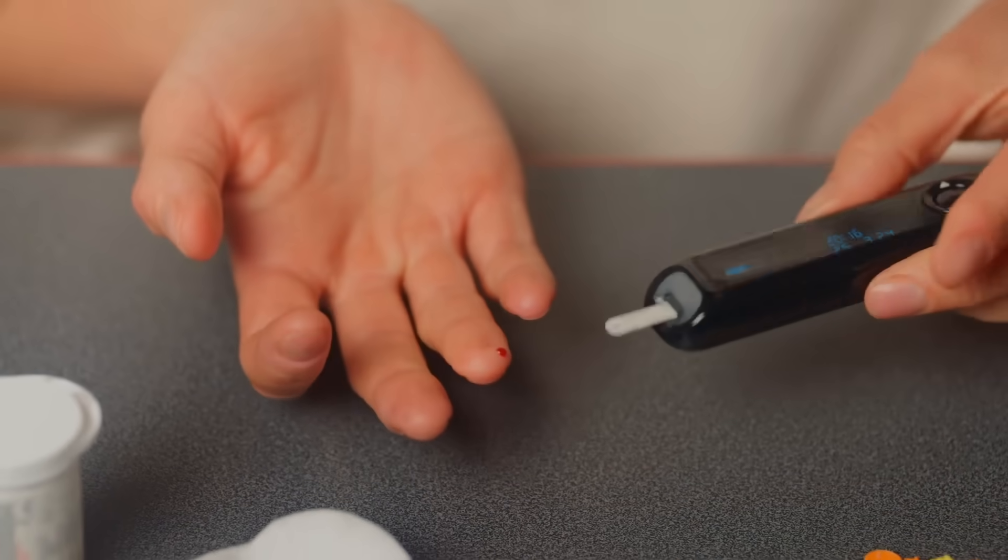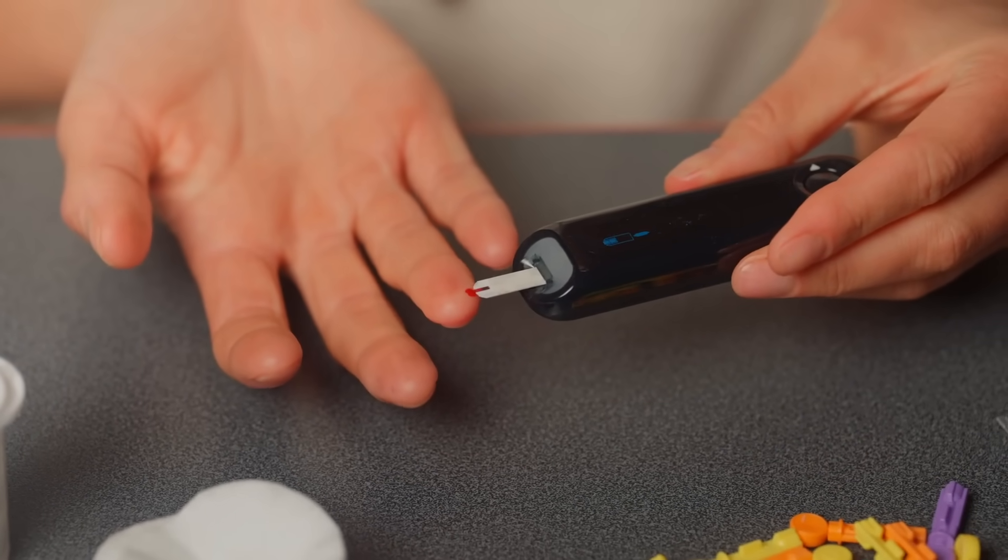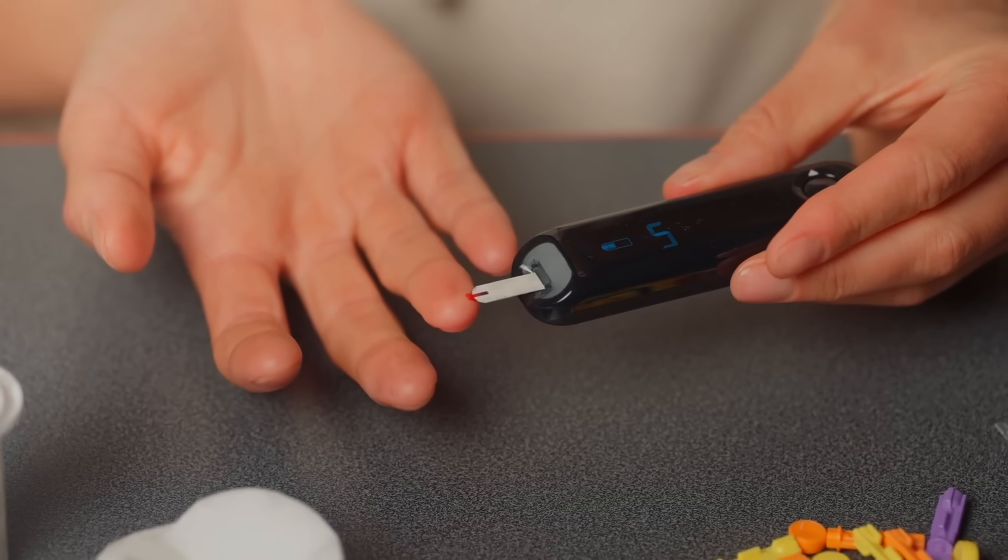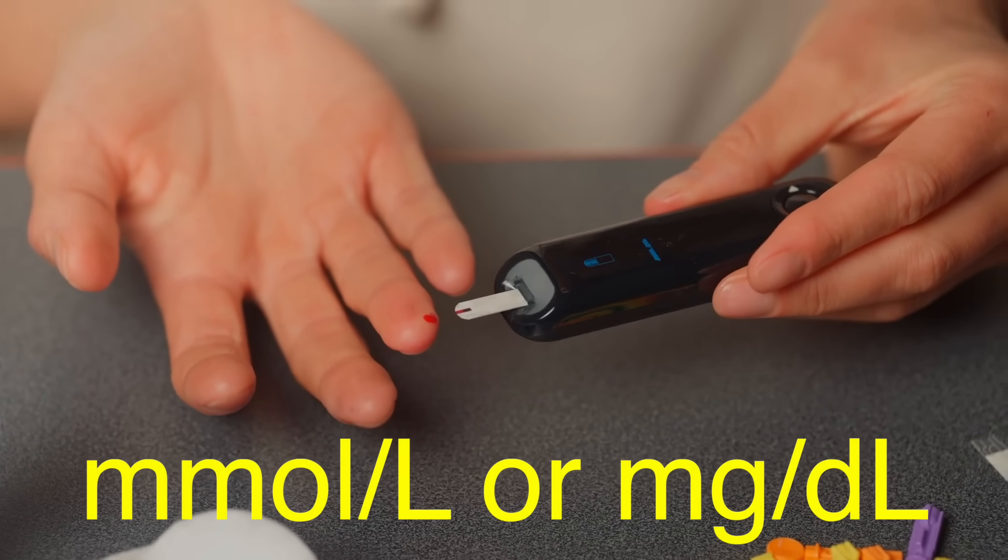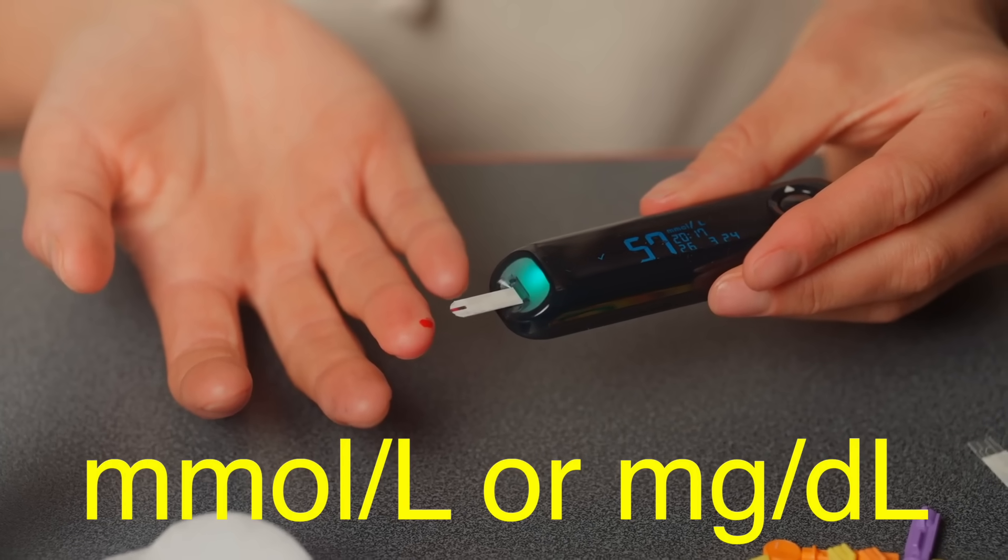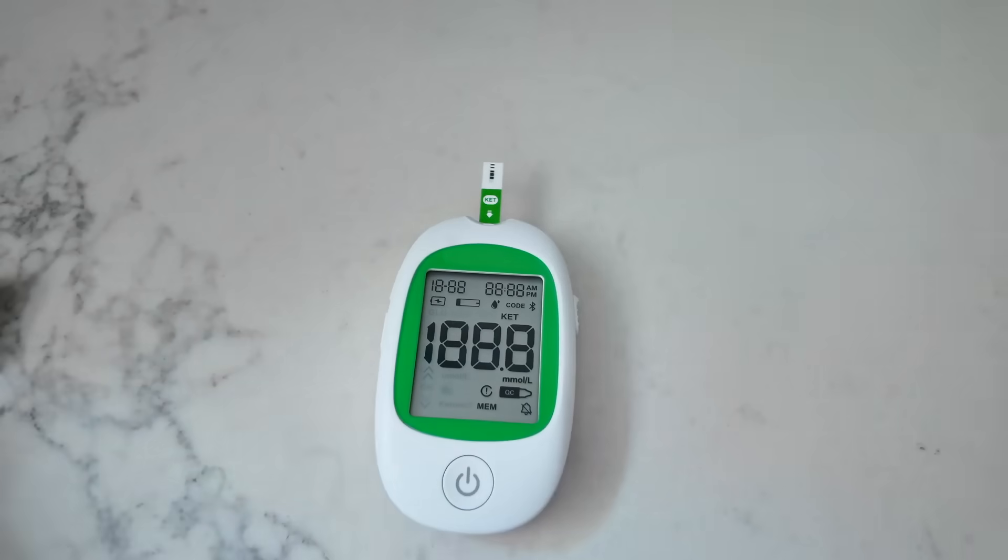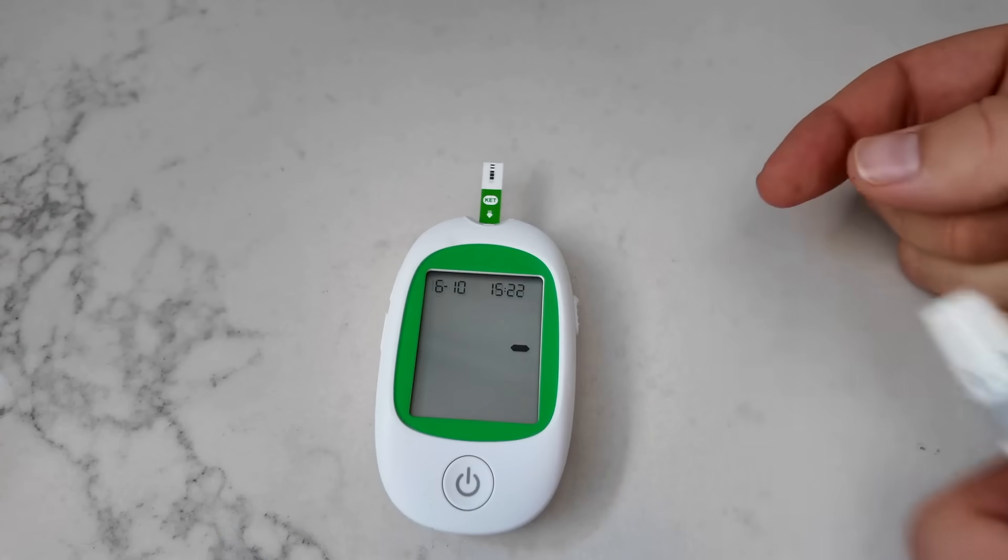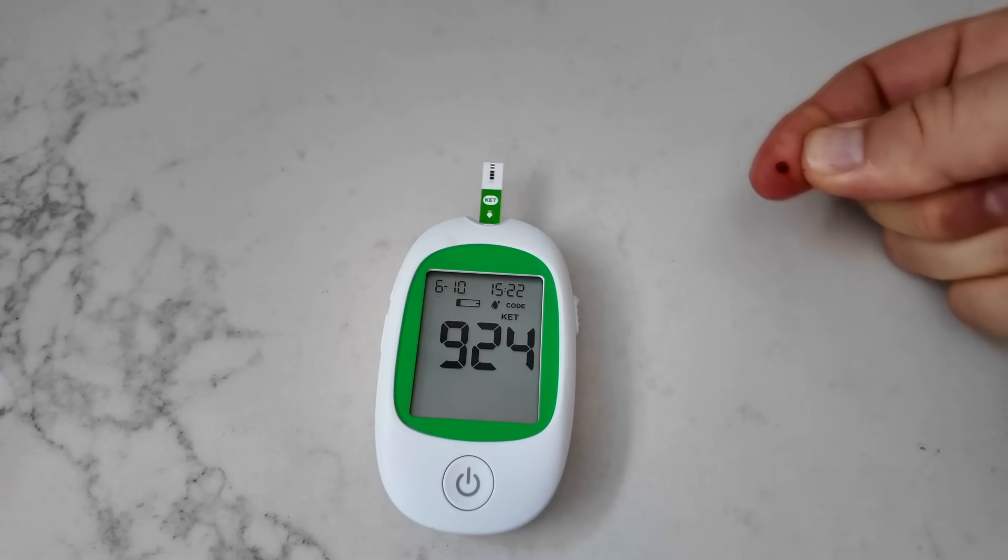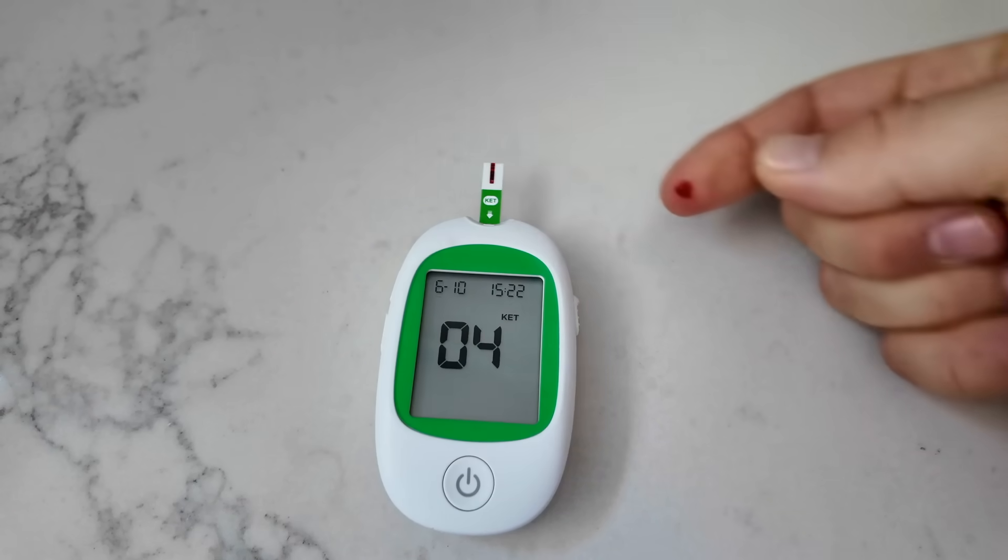The glucose meter's job is to take that electrical signal and translate it into something meaningful: your blood sugar level, displayed in millimoles per liter or milligrams per deciliter, depending on where you live. Inside the meter, a microprocessor analyzes the signal and performs calculations based on the specific characteristics of the test strip and the enzyme used. The entire process, from blood sample to result, takes about 5 to 10 seconds.